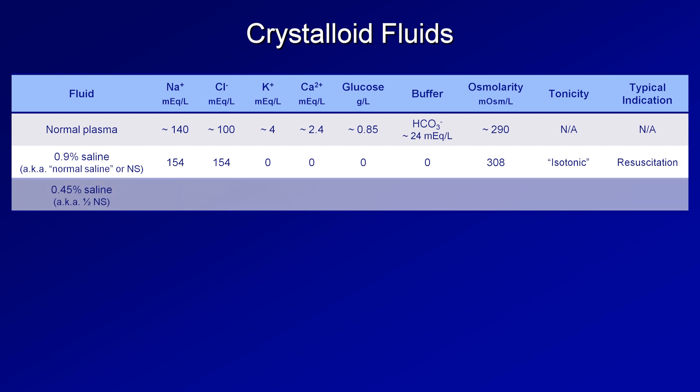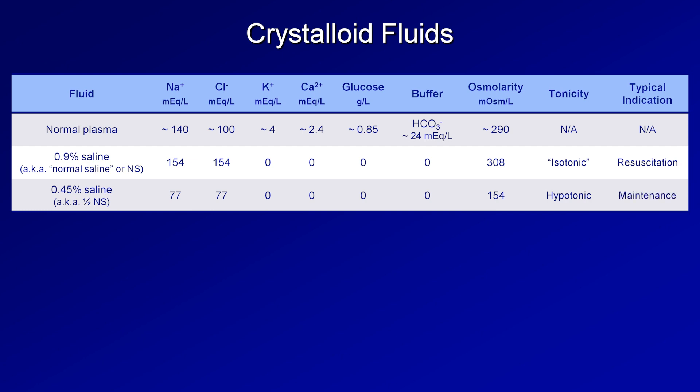The next crystalloid is 0.45% saline, predictably called half normal saline or half NS. This has 77 mEq/L of sodium and chloride, and a predicted osmolarity of 154 mOsm/L — substantially lower than 290 mOsm/L of plasma — so this is a hypotonic fluid. Bolusing hypotonic fluid can induce hemolysis as well as rapid and dangerous drops in plasma osmolarity. Therefore, half normal saline is not used for quick resuscitation, but rather for maintenance — replacing ongoing physiologic fluid losses such as urine production roughly in real time.